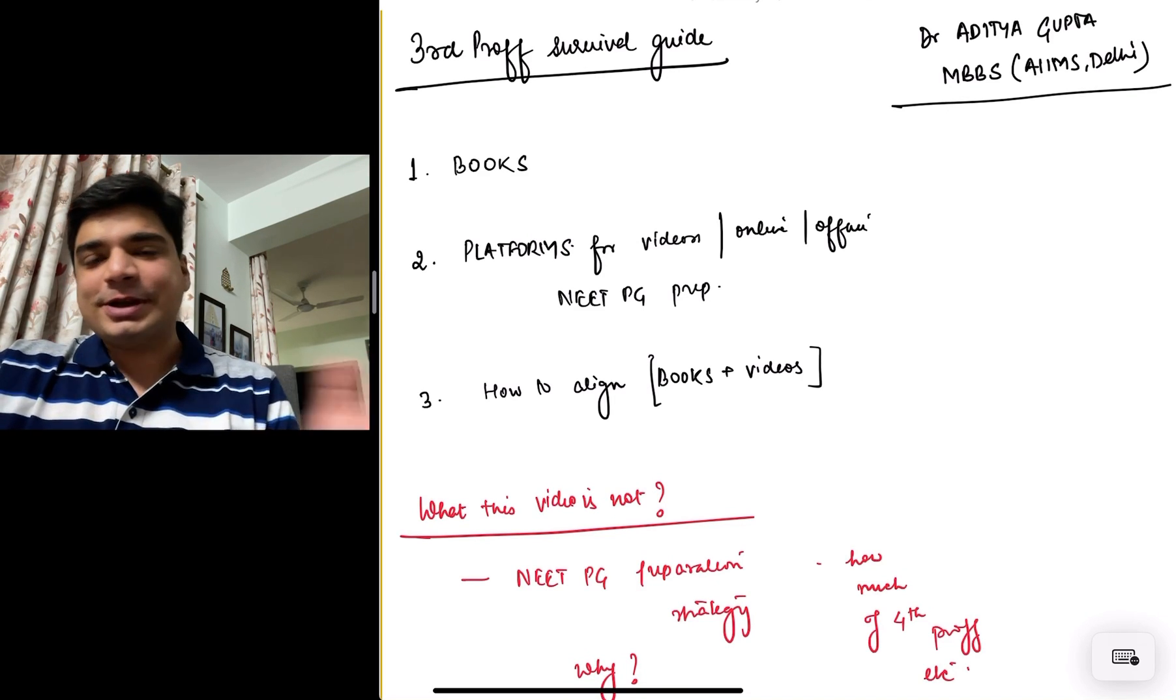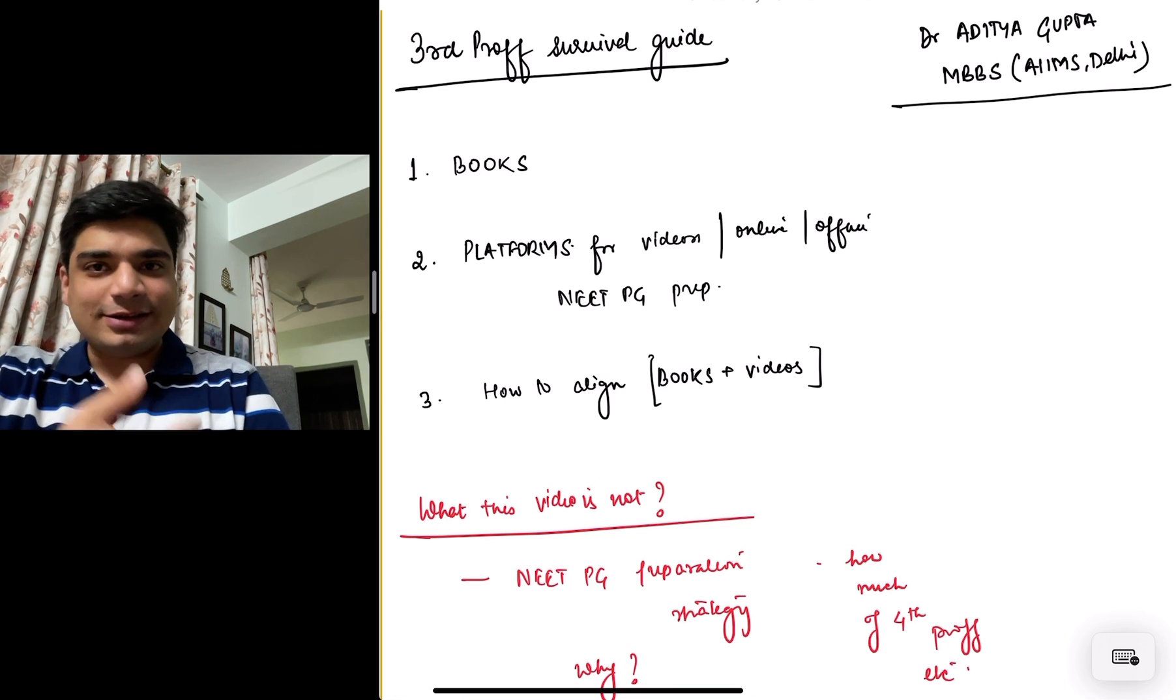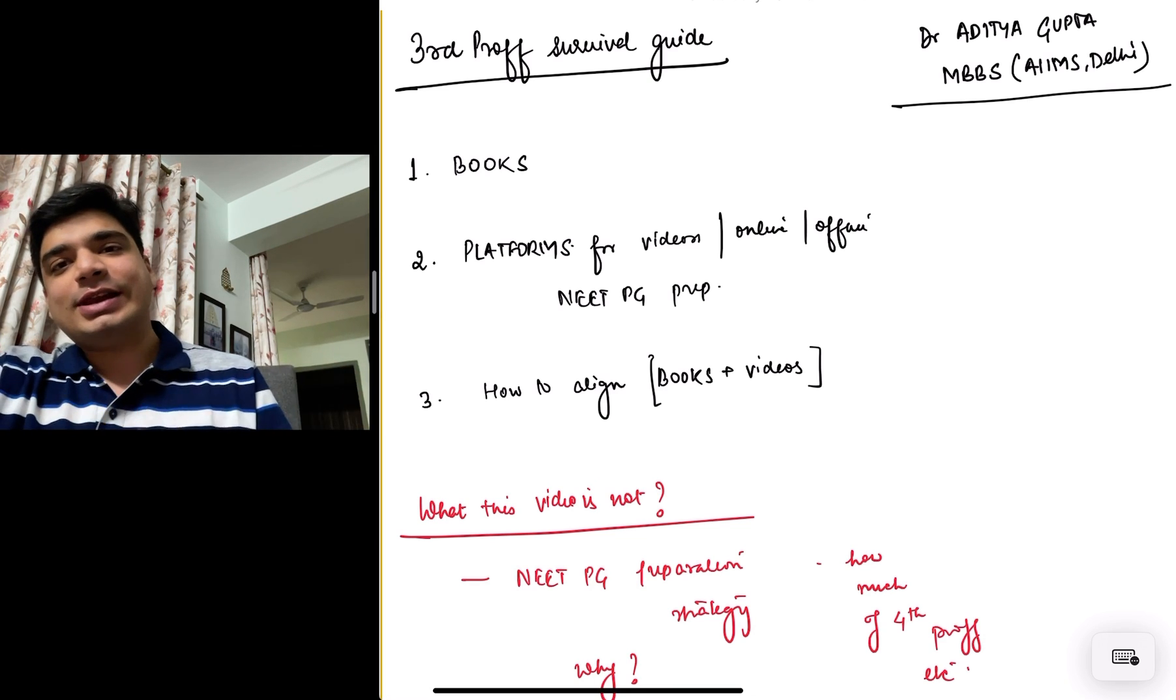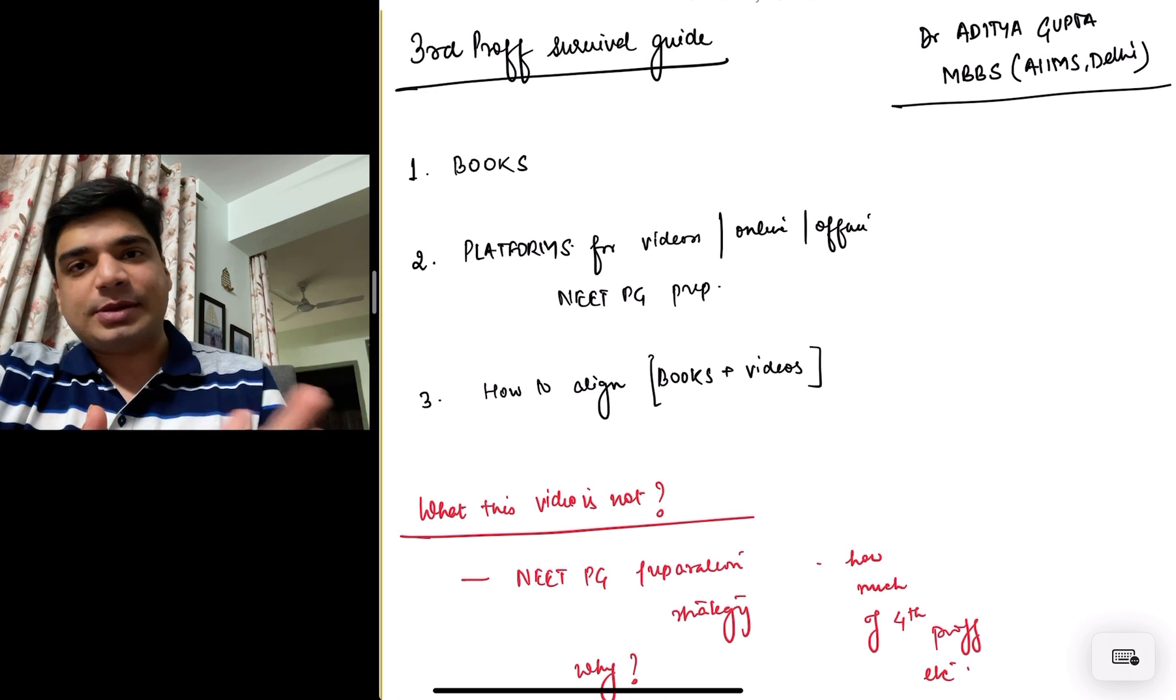Hello everyone, this is Dr. Arjit Gupta. I did my undergraduate from AIIMS Delhi, following which I did my MD in Pediatrics again from AIIMS Delhi and I am now pursuing my SS, that is your Super Specialization in Pediatric Oncology again from AIIMS Delhi.